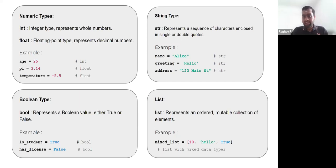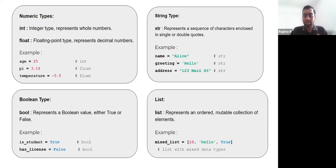We also have the string data type, where a character or string both come under the string data type. You can initialize a string with either double quotes or single quotes, as shown here.